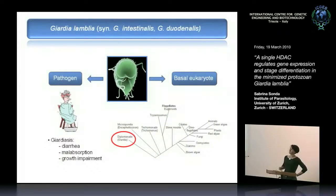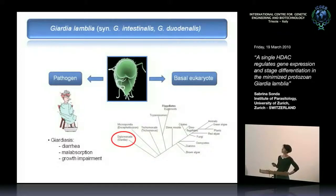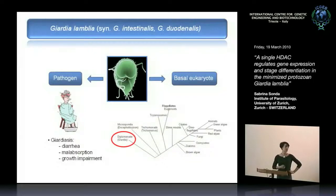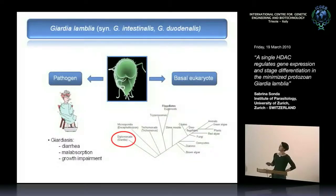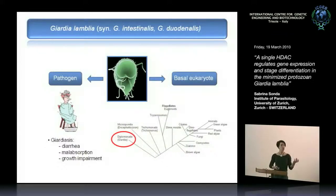The second reason to study this parasite is its phylogenetic position. This parasite branched very early in the eukaryotic tree and is considered to have 2 billion years of independent evolution. It's like looking through a window into the past — a living fossil. This puts a lot of interest, but also raises the question: what can be considered the core of a eukaryotic cell, and can this parasite give some answers?